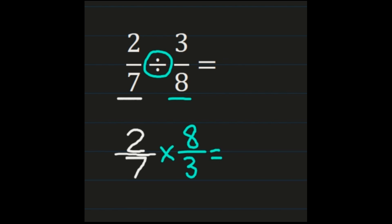Now that we have a multiplication problem set up, we're going to follow the steps for multiplying fractions. So numerator times numerator: 2 times 8 is 16, and then we'll multiply our denominators. 7 times 3 is 21. So we get 16/21, and we need to ask ourselves, can we simplify? Well, 16 and 21 don't share any common factors, so our final answer is 16/21.